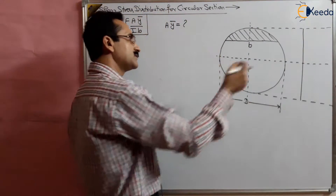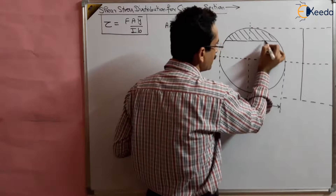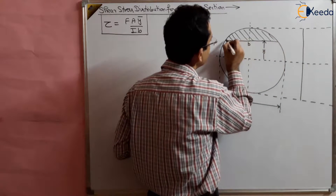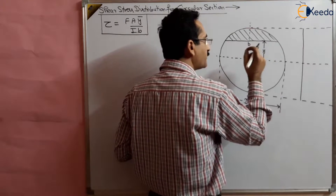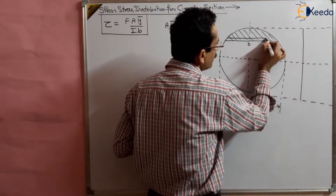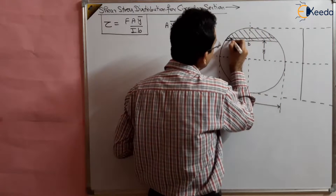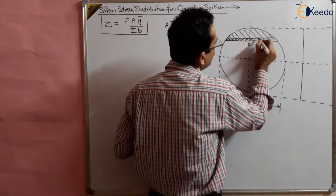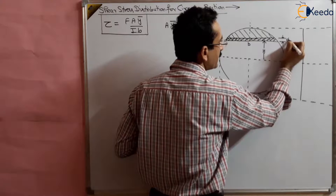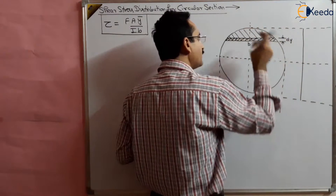What we can do is take a further smaller section within this small section. Suppose the distance of this strip from the neutral axis is y, and B is the width of the total part. We take a further small strip of thickness dy at distance y. We can find out the area of this strip — it is a rectangle, so area of the small strip is B·dy.